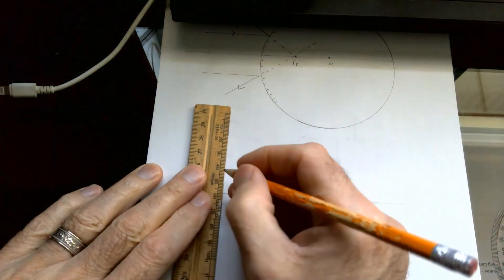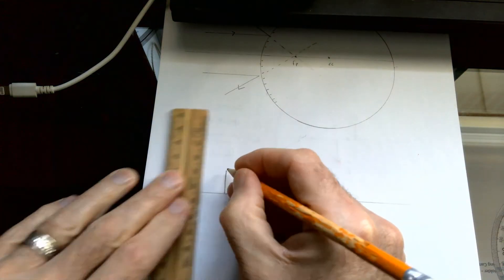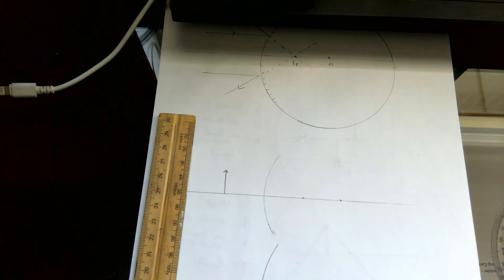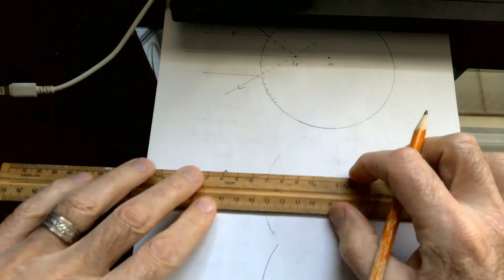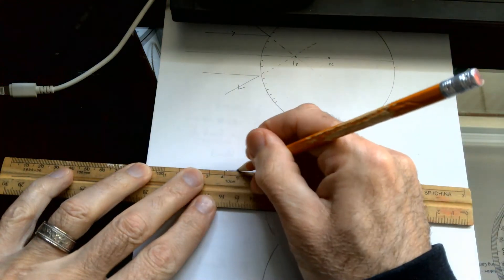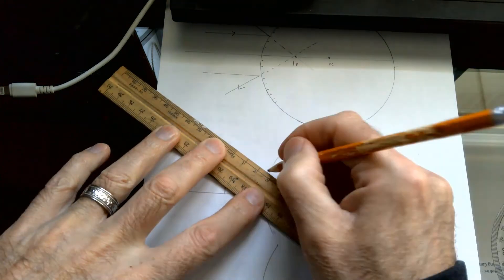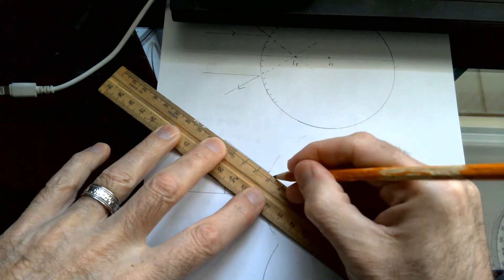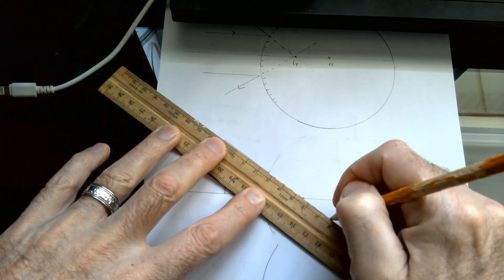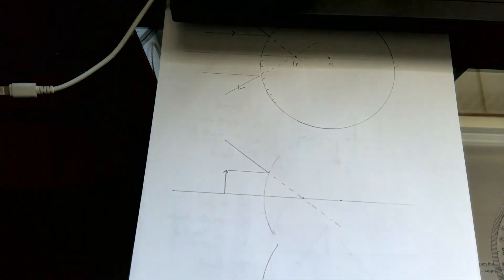So if somebody is standing right here, so this is our person. The first line we can draw is parallel to the principal axis straight to the mirror. It reflects away from the mirror. Extend your virtual line backwards. That's your first drawing.